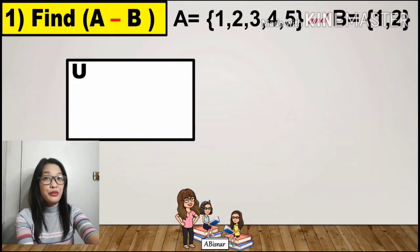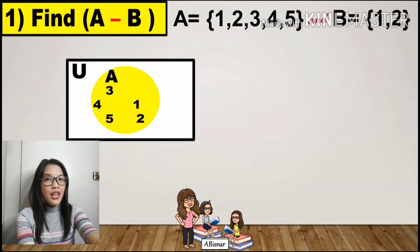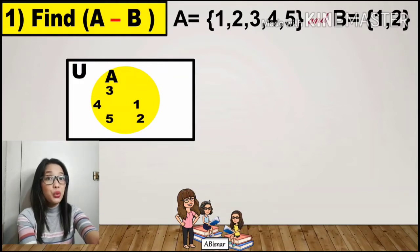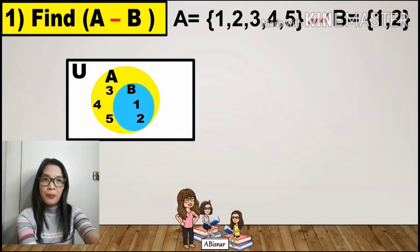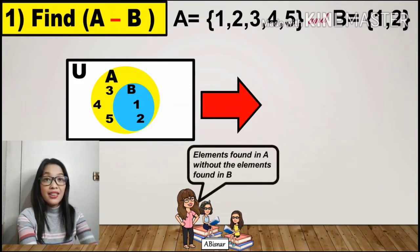We must have our universal set. Set A has the elements 1, 2, 3, 4, and 5. Notice that set B has the elements 1 and 2, which are also in A, and therefore B is a subset of A. Now how are we going to get the difference?